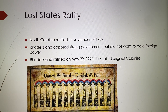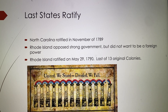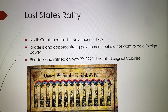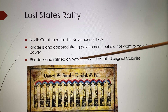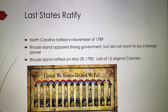The last two states eventually ratified as well. North Carolina ratified in November of 1789. Rhode Island, which had never wanted to come to the convention and opposed strong government altogether, finally realized it didn't want to be treated as a foreign power by the other states. Rhode Island ratified on May 29th, 1790, becoming the last of the 13 original colonies to ratify the Constitution.